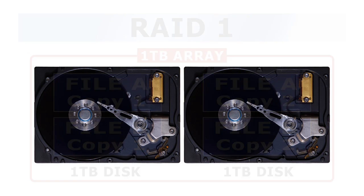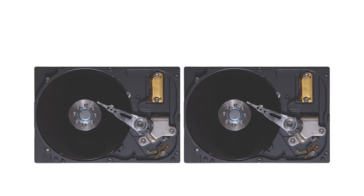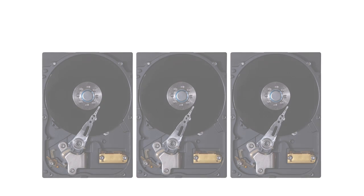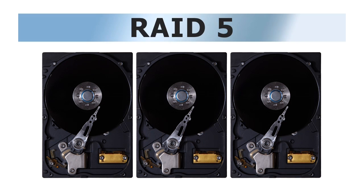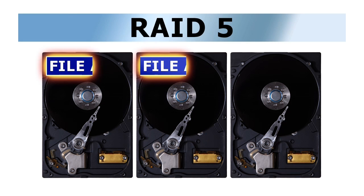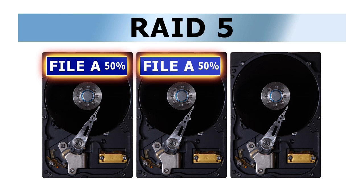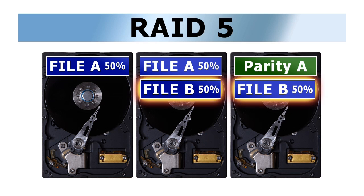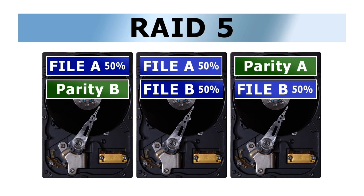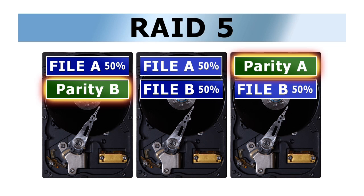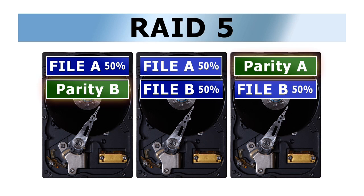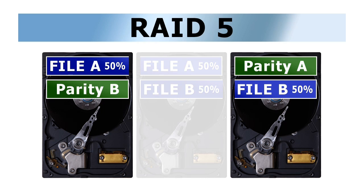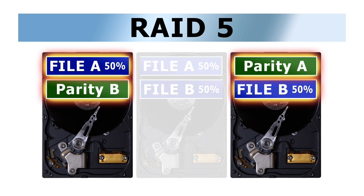If more than two drives are used, several other configurations become possible. For example, using three or more drives, RAID 5 strikes a balance between speed and redundancy by stripping data across two drives, but also writing parity data to a third. Parity data maintains a record of the differences between the blocks of data on the other drives, in turn permitting file restoration in the event of a drive failure.